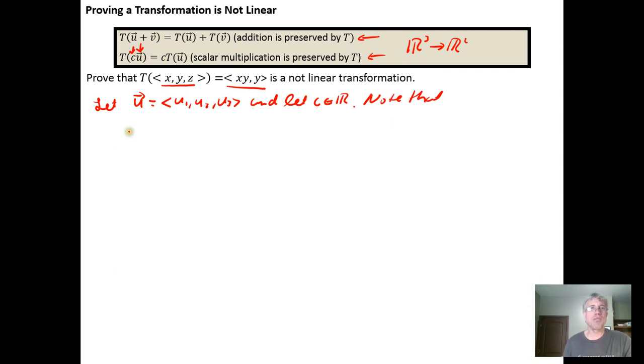Note that let's scale a transformed vector. Note that C times the transformed U is equal to C times the vector. Now let's transform U. The transformation says take the product of the X and Y component, so the product of the X and Y components will be U sub one, U sub two, comma, and then the second component is just the Y component, U sub two.